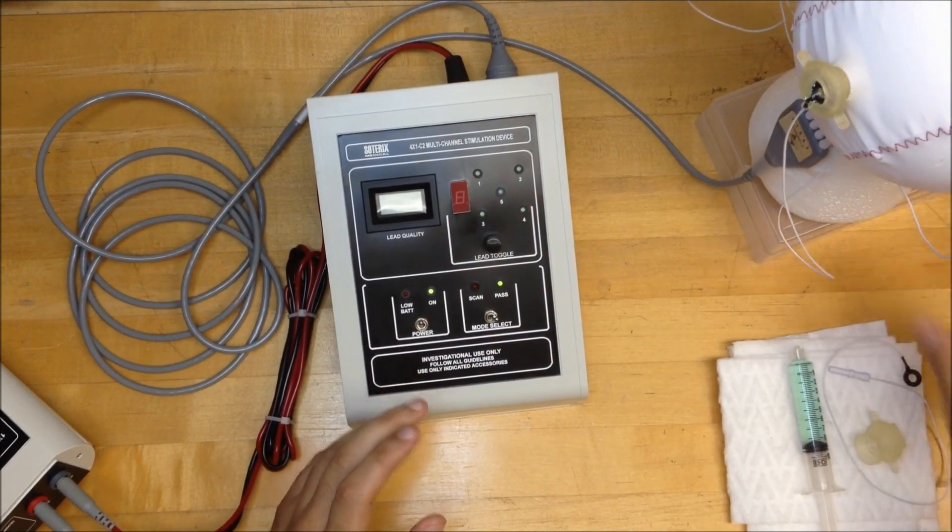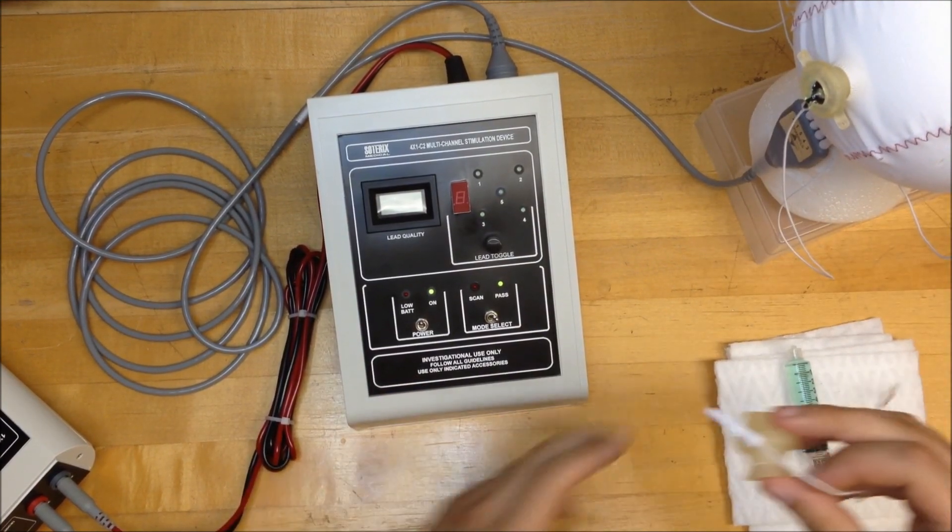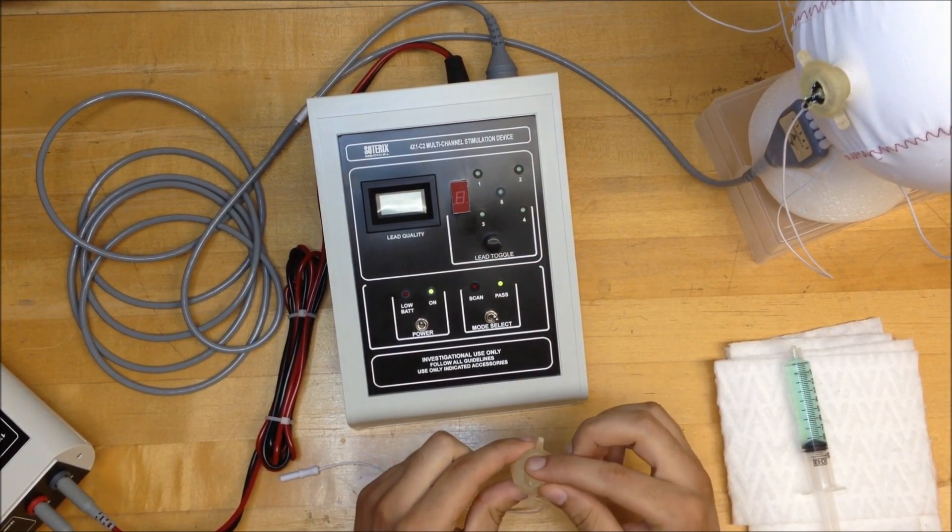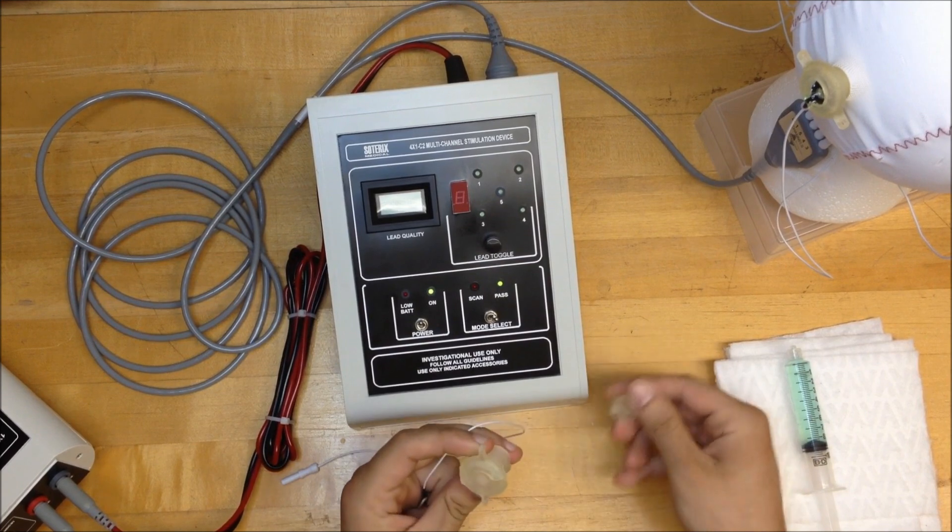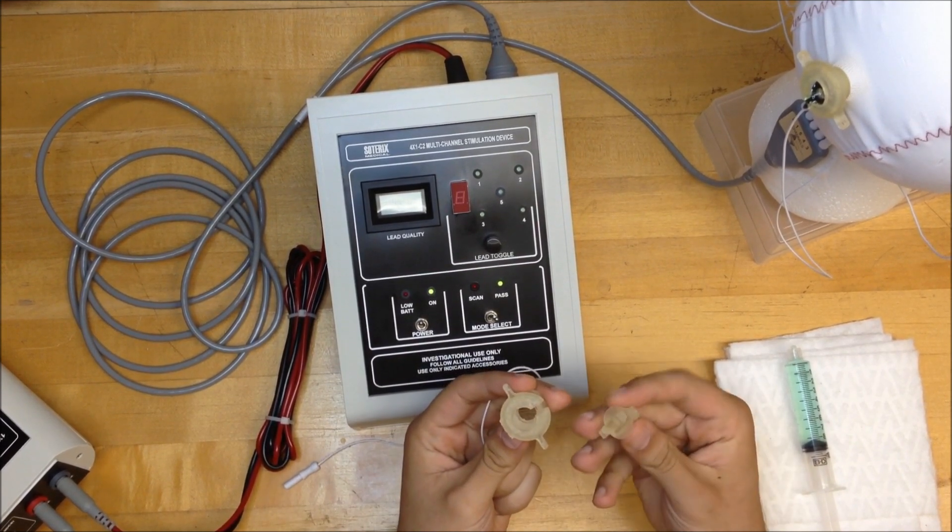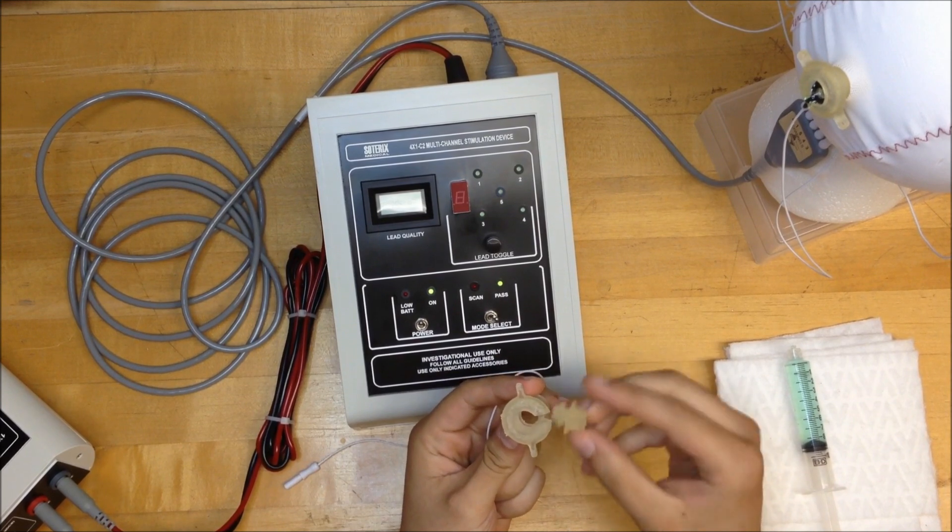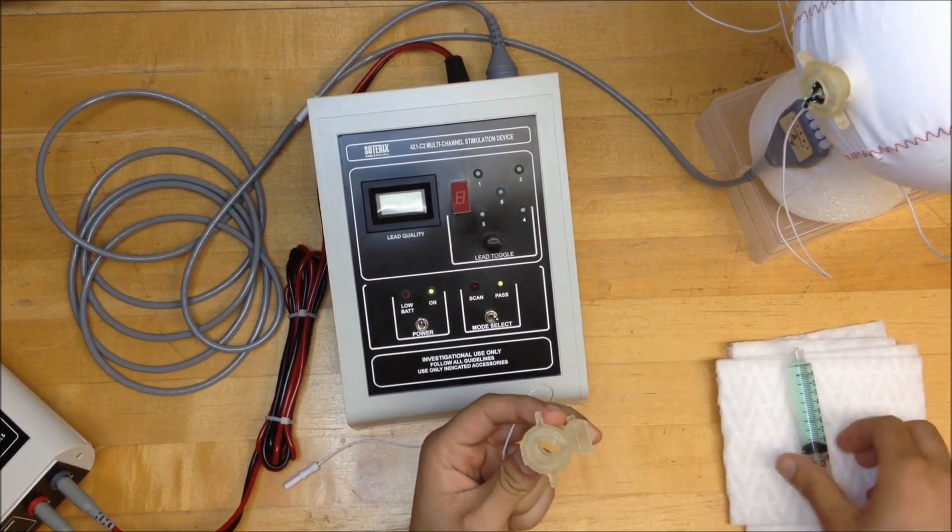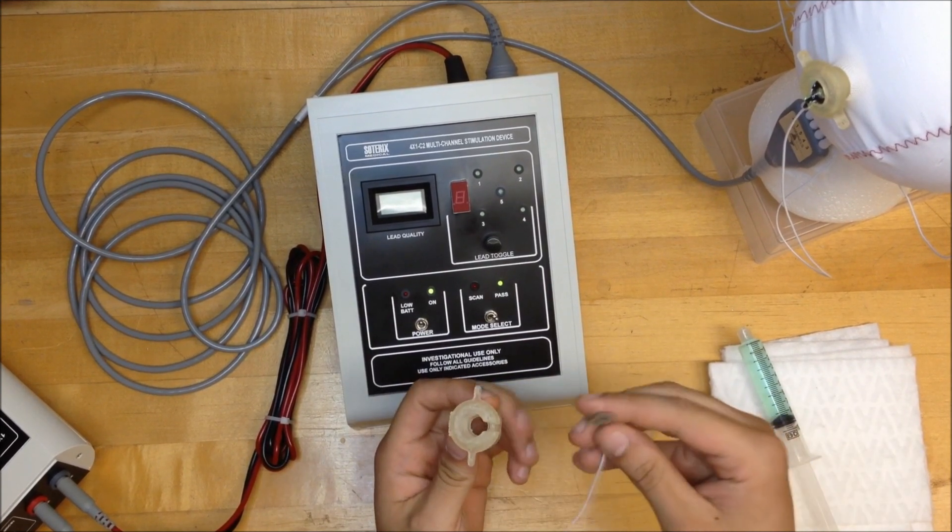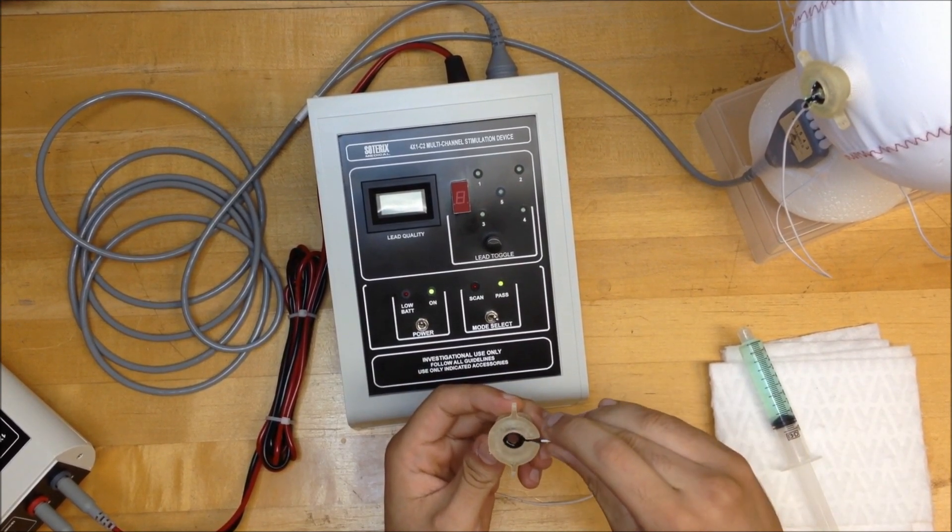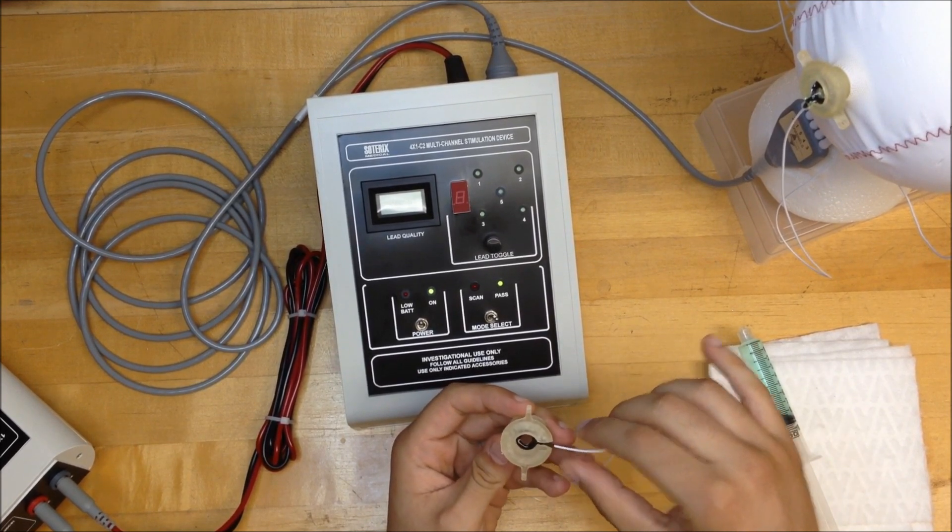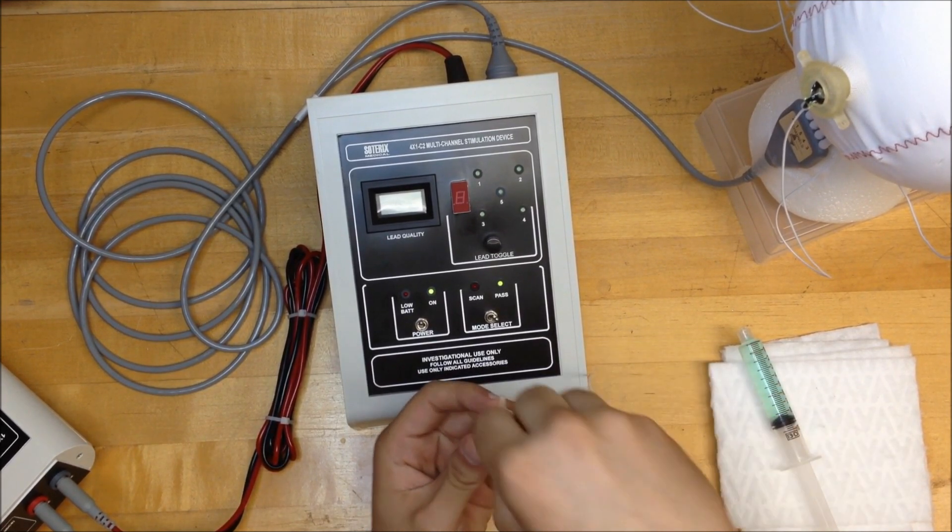Very briefly, I'm going to show you how to set up the ring electrode through the HD adapter. The HD adapter looks like this and has a lock or cover. You first make sure the ring electrode sits inside the HD adapter like this, and you lock it with the cover on it.